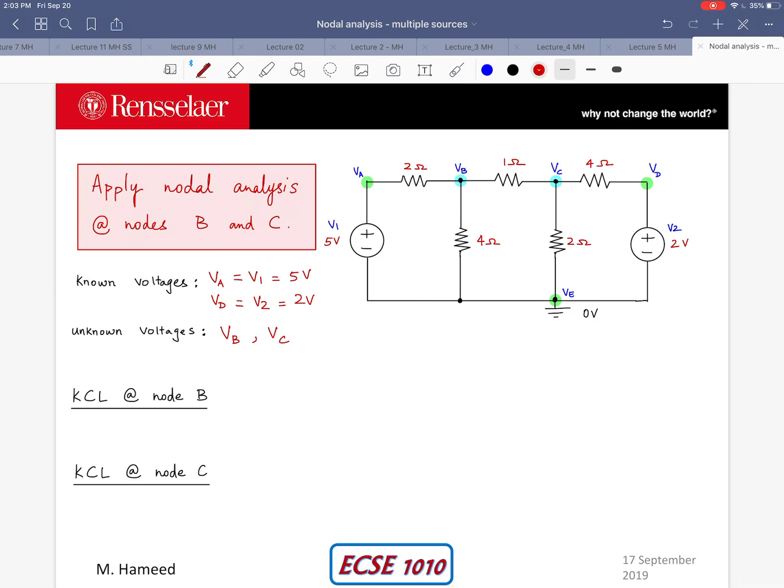So this is an example in which we have two known inputs and two unknown outputs. Let us see if we can write KCL equations at node B and node C in order to find these two unknowns.